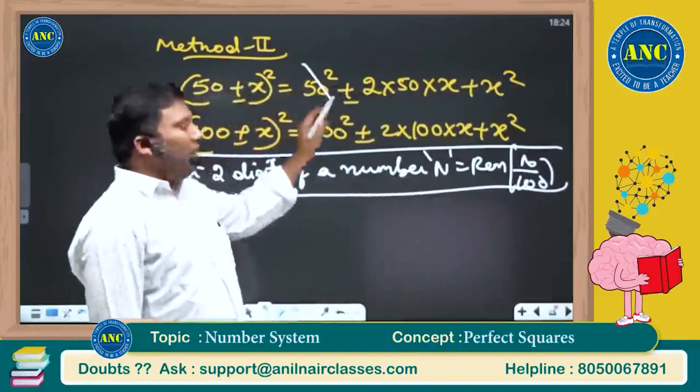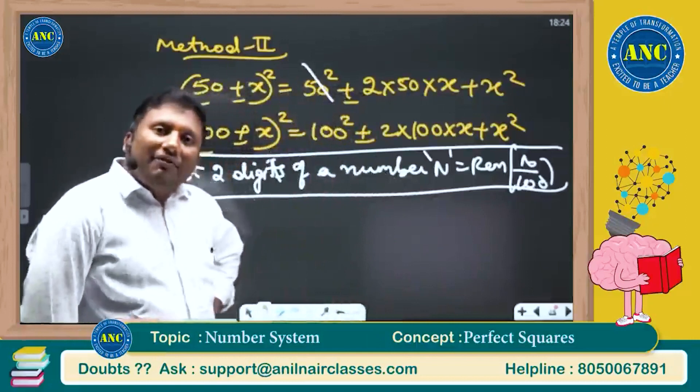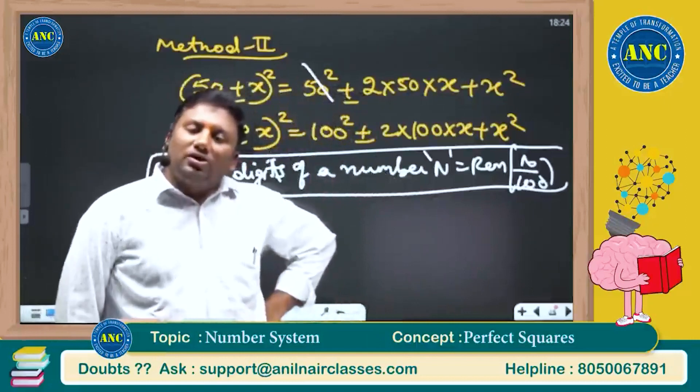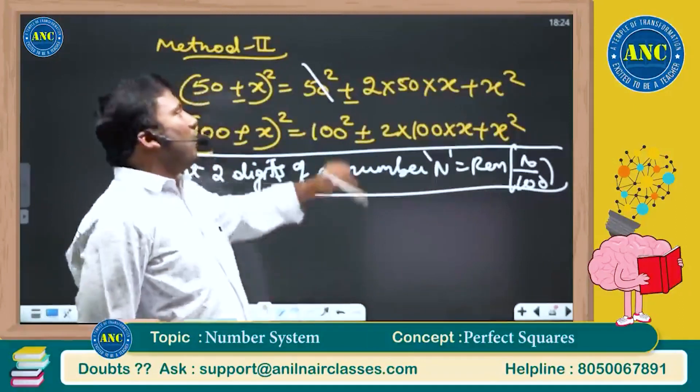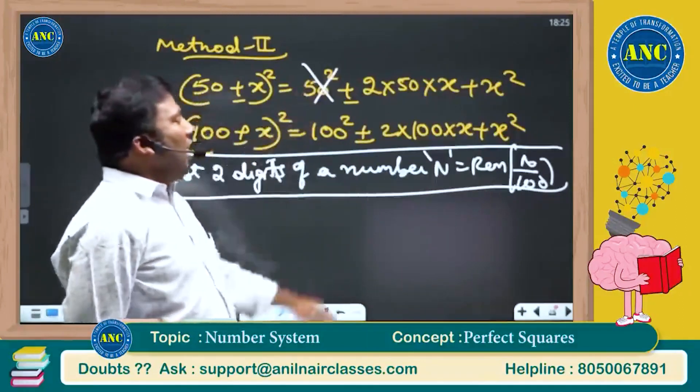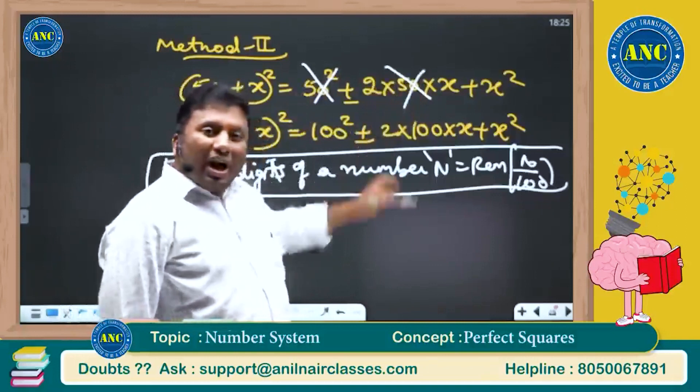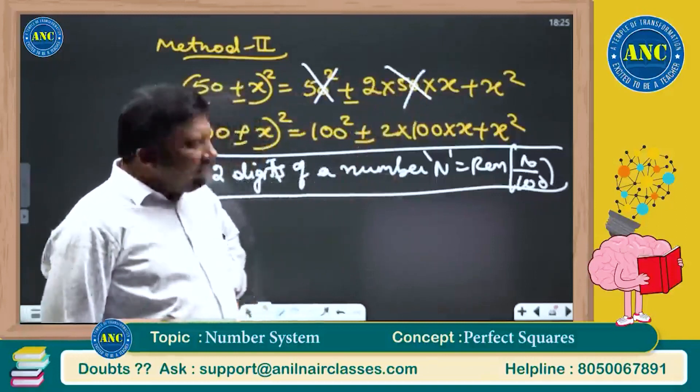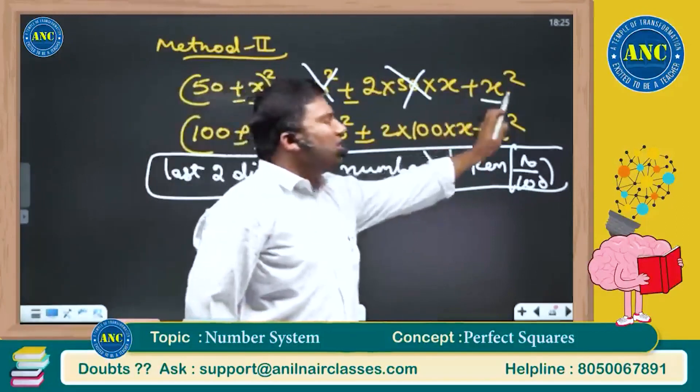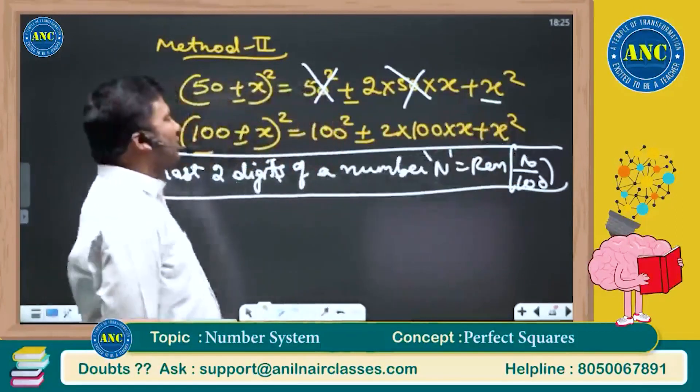Now see here, 50 square. What is 50 square? 50 into 50 is 2500. Is it divisible by 100? Perfectly divisible. What is the remainder? Zero. 100 into any number, perfectly divisible by 100? Definitely yes. Remainder zero.